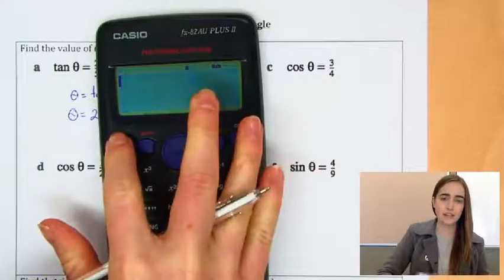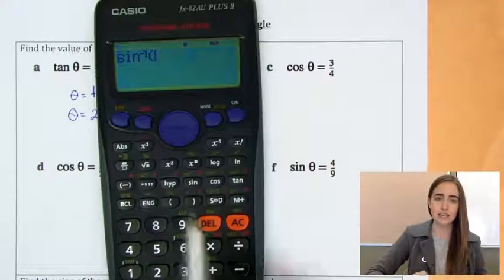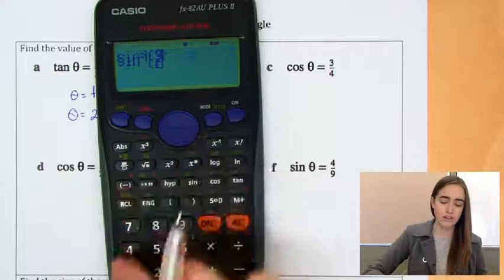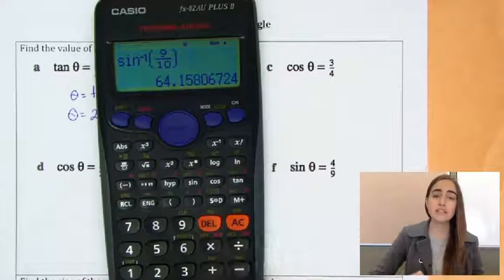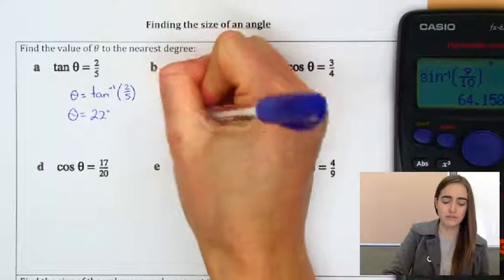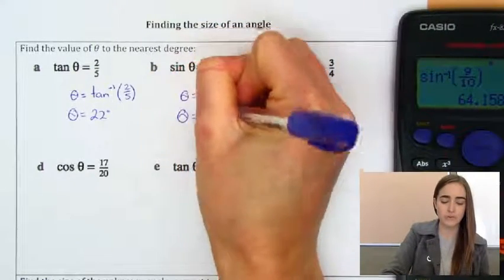And we'll put that in our calculators, so shift sine to get sine inverse, and then 9 over 10. And that'll give us to the nearest degree, 64. So theta equals 64 degrees.